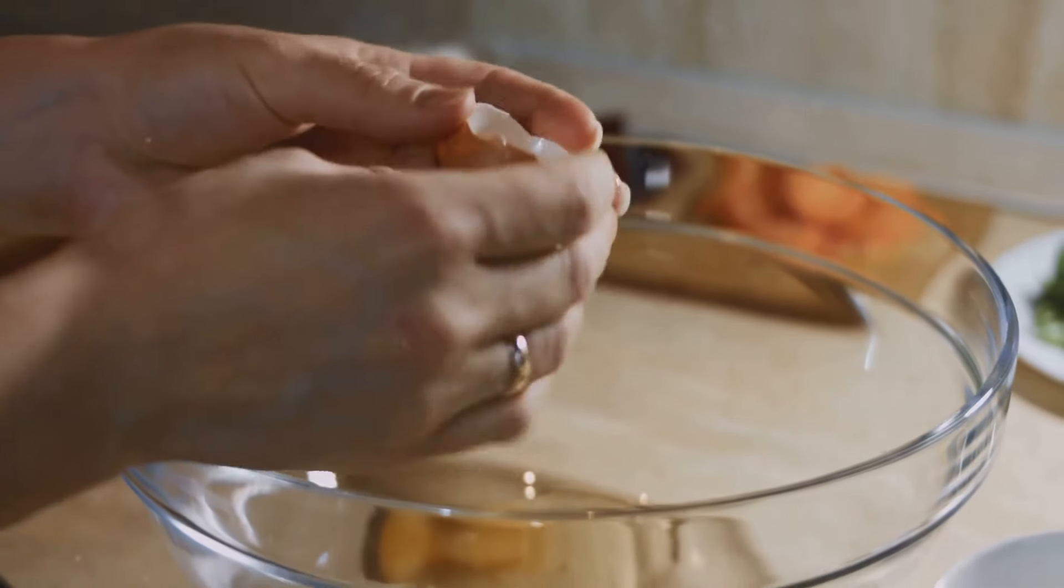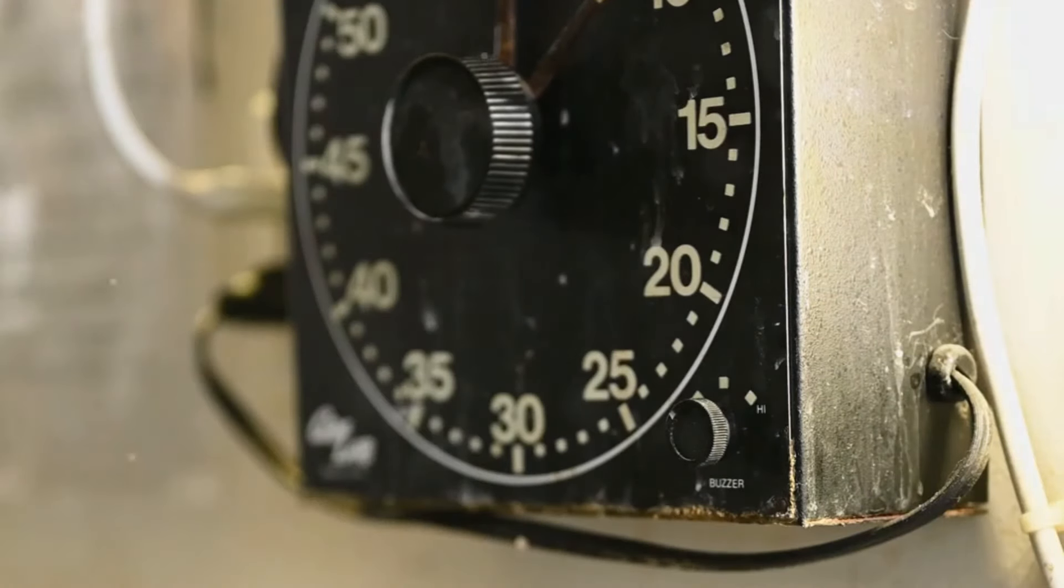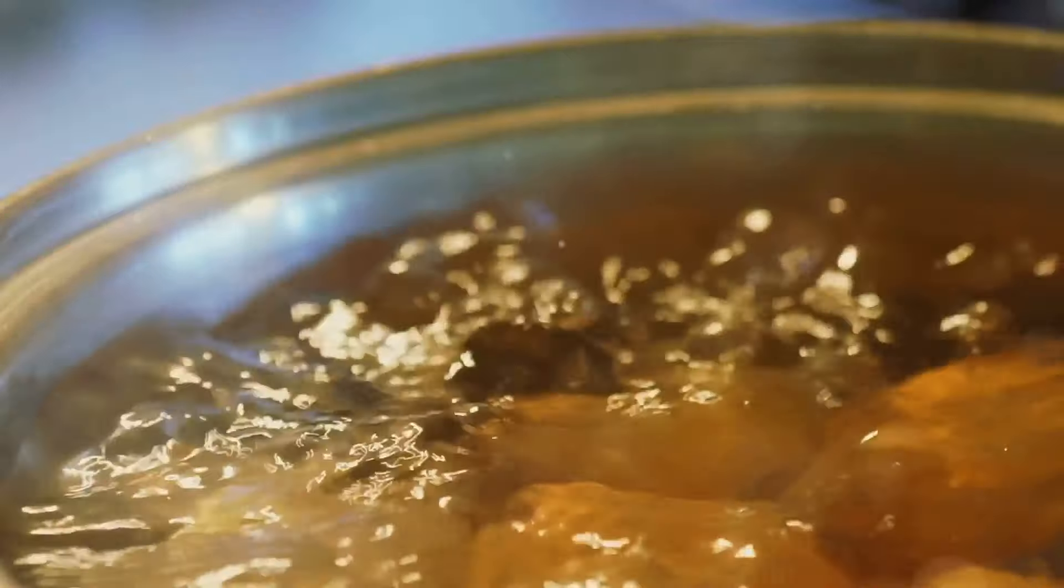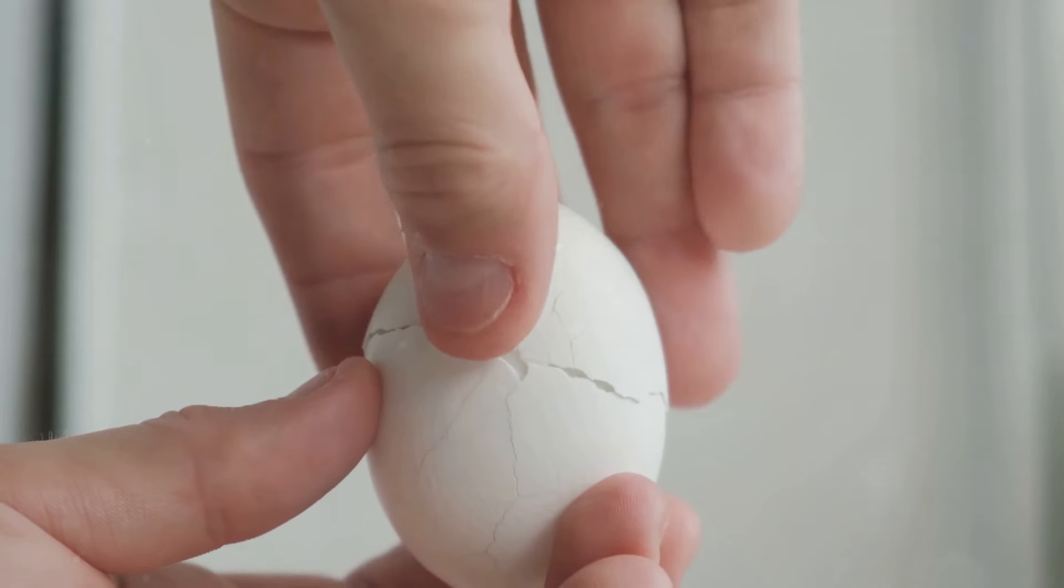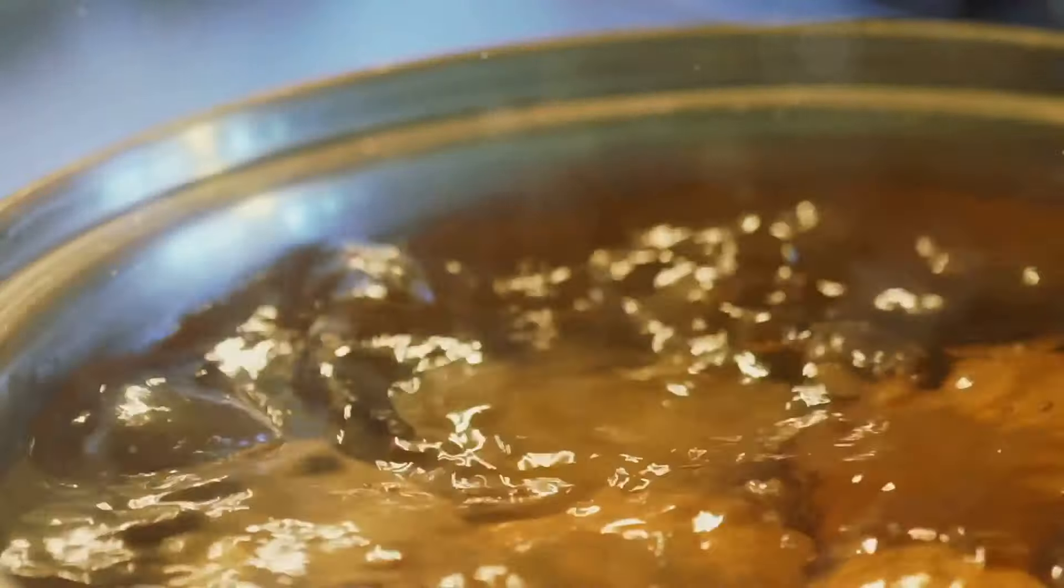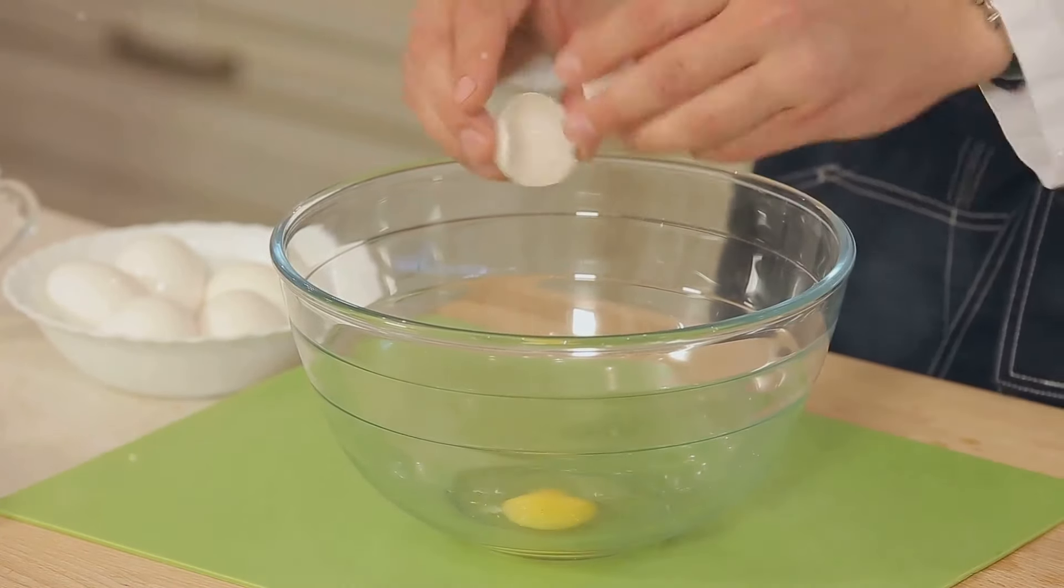Achieving different levels of doneness is all about timing. For soft-boiled eggs, cook for 4 to 6 minutes. The whites will set and the yolk will be runny. For medium-boiled eggs, cook for 7 to 9 minutes. The yolk will be slightly set but still creamy. And for hard-boiled eggs, cook for 10 to 12 minutes. Both the whites and yolks will be fully set.